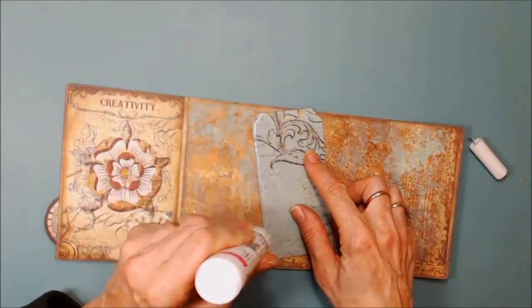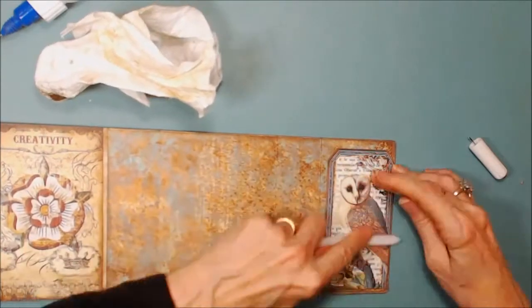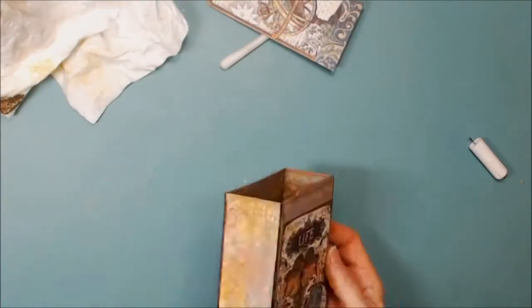So here I am making a little tuck pocket, so I'm just putting glue around two sides, and I'm adhering it on the right side. You can see you can tuck a little tag into it.